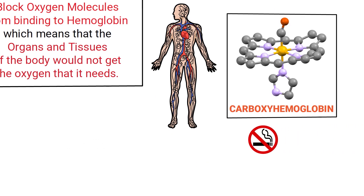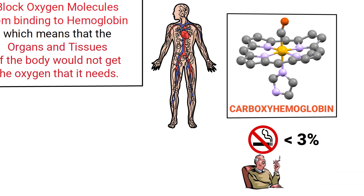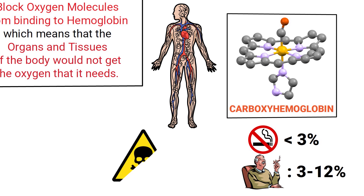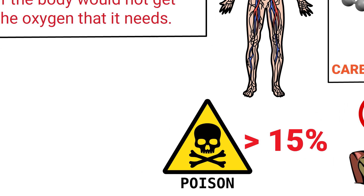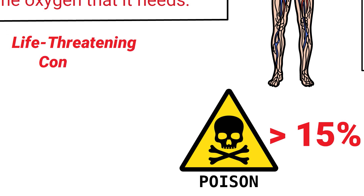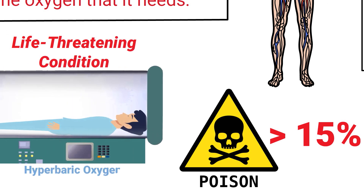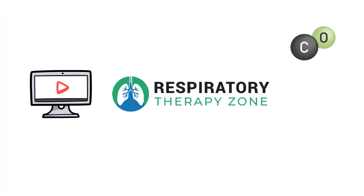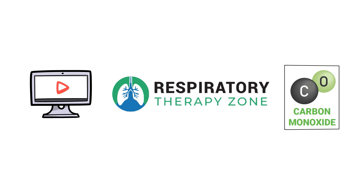A normal carboxyhemoglobin level for non-smokers is less than three percent. Smokers may have carboxyhemoglobin levels anywhere from three to twelve percent. A person with carbon monoxide poisoning will have a carboxyhemoglobin level greater than fifteen percent, which is considered a life-threatening condition requiring treatment in a hyperbaric oxygen chamber.